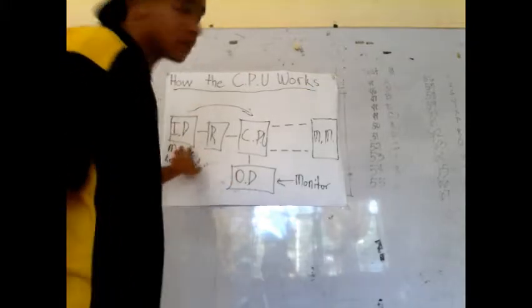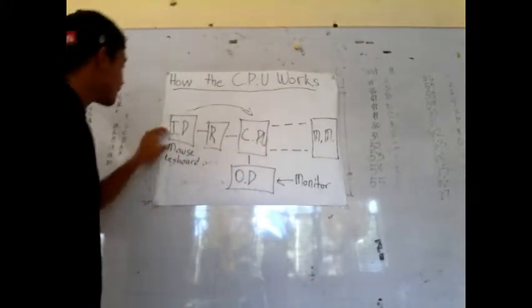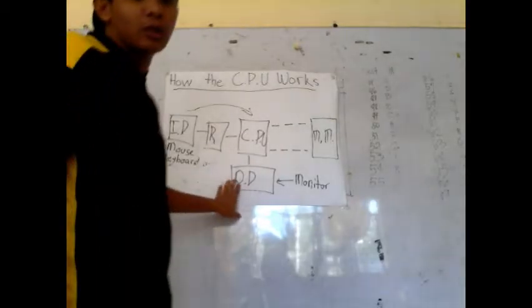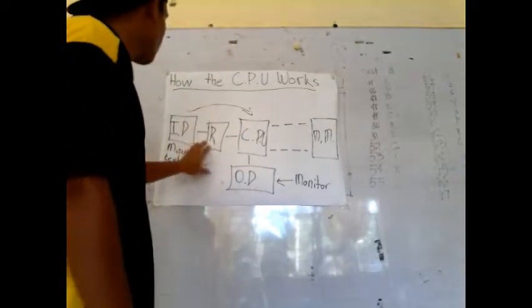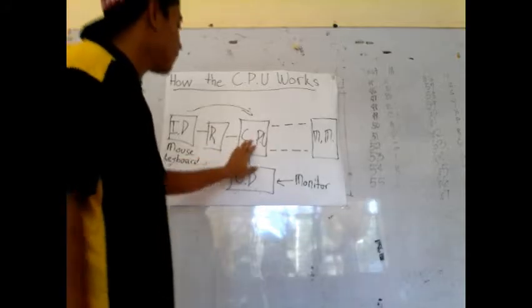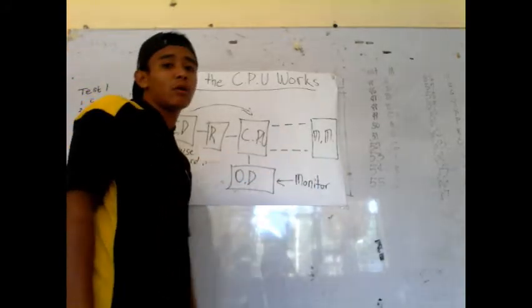The peripherals are the input devices and output devices. The basic input output subsystem, the CPU, the main memory, the programs.